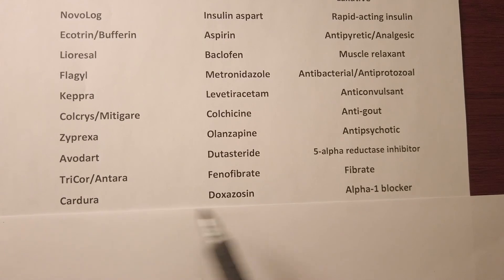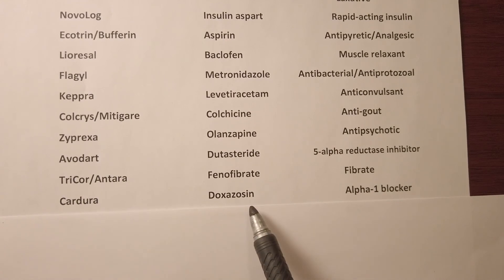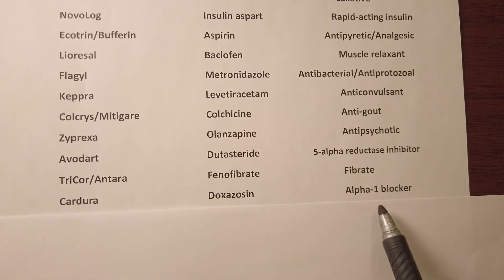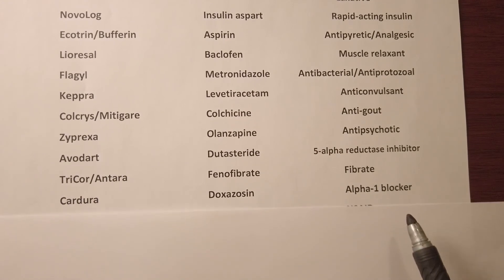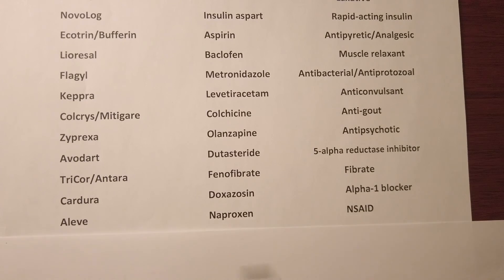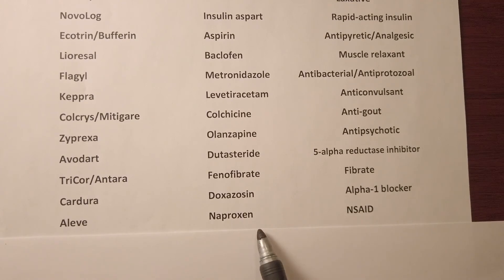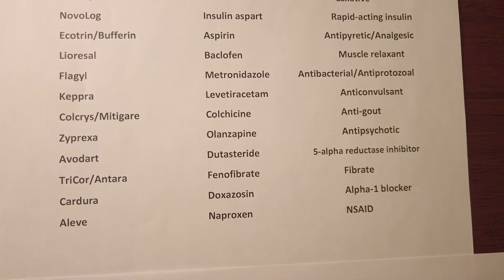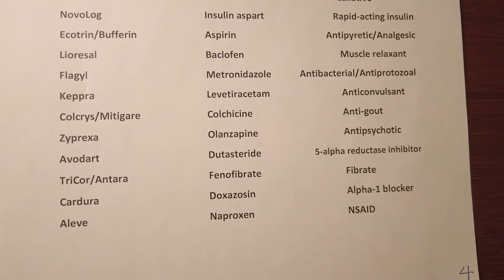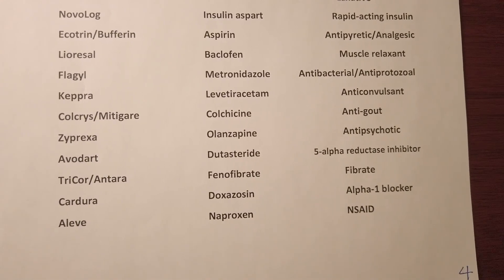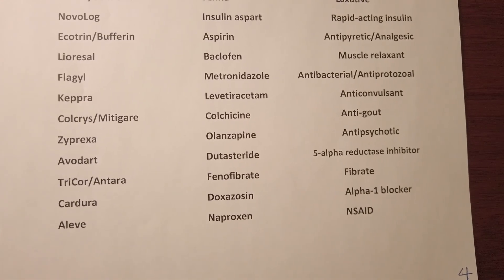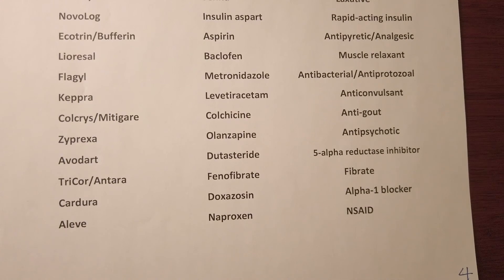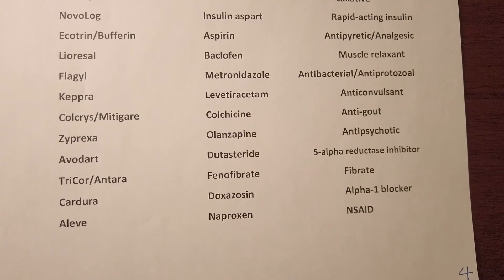Cardura, generic name doxazosin, is an alpha-1 blocker. Aleve, generic name naproxen, is an NSAID pain reliever. Thank you for watching, and please subscribe for more videos.